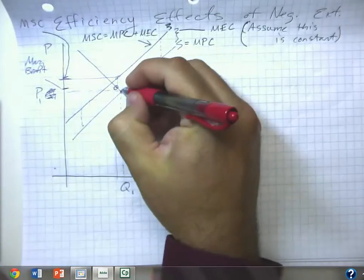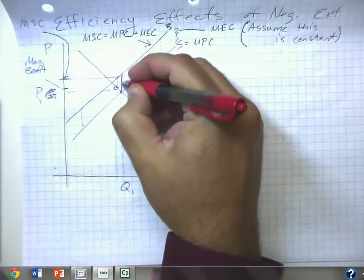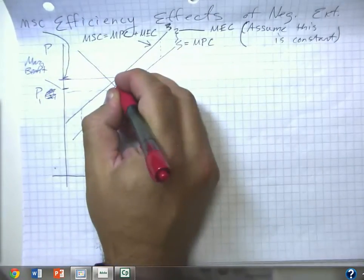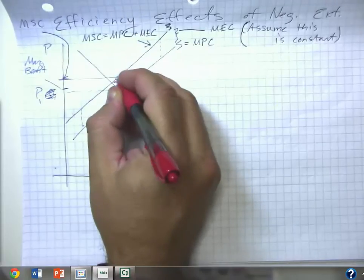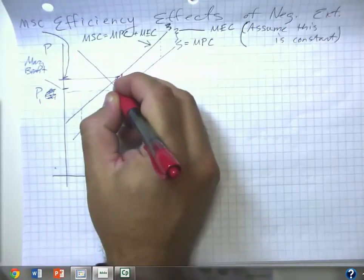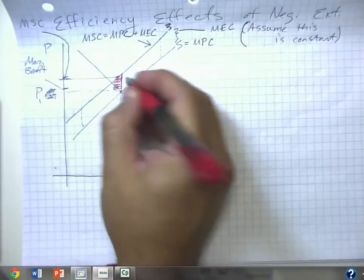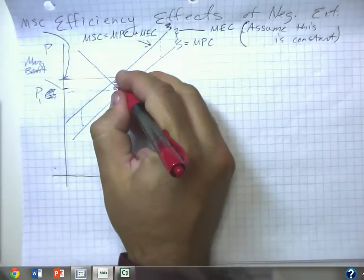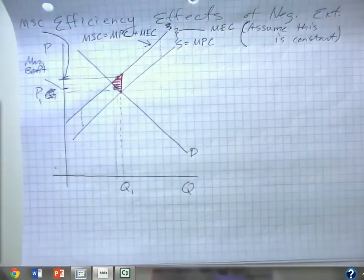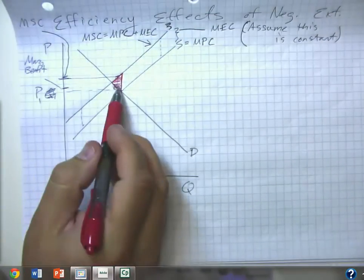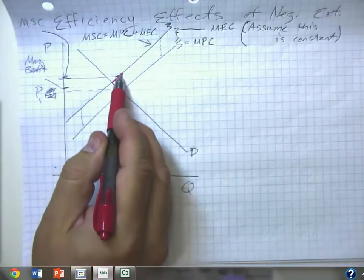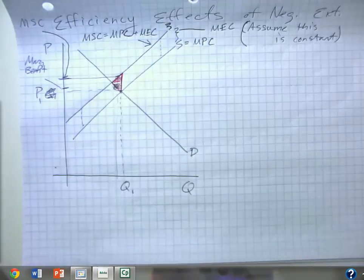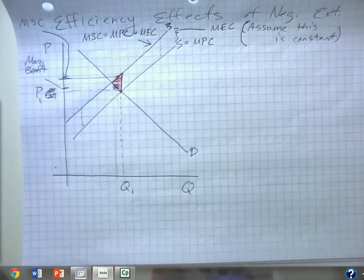So that's going to be true for all of these units that are produced in the market equilibrium. They're all going to have total costs of production greater than buyer value. So we're going to have some deadweight loss. This red shaded triangle here is the amount of deadweight loss because that's all the units where the total costs of production are greater than someone's willingness to pay.